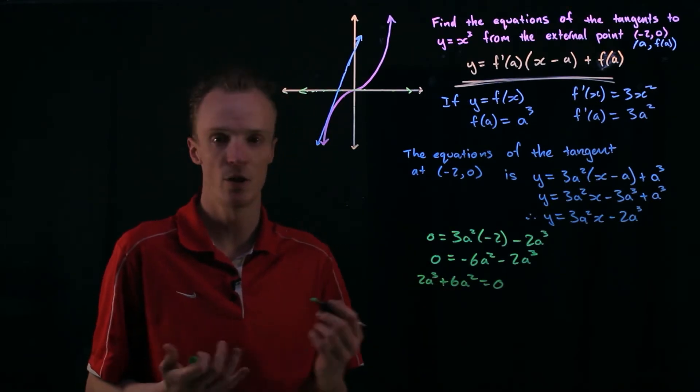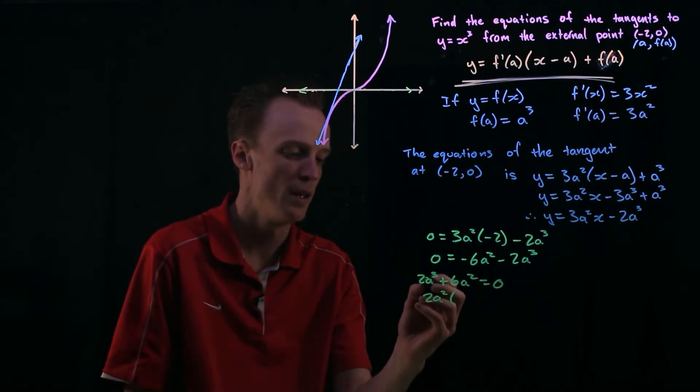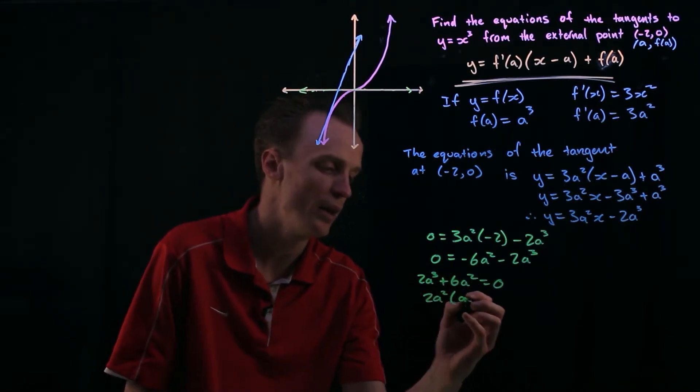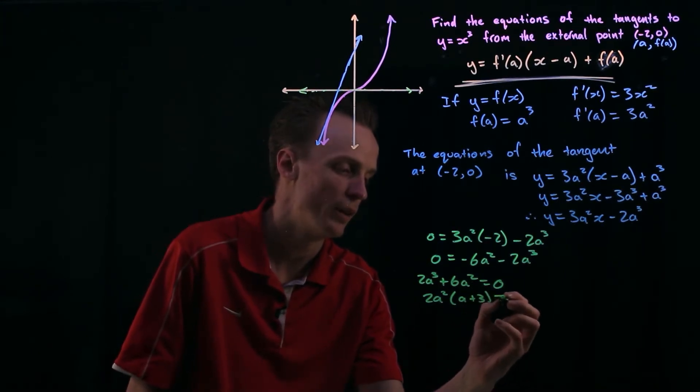And you can see here that it's got a common factor of 2a squared. So if I remove 2a squared out of it this will leave me with a and this will leave me with 3 is equal to 0.